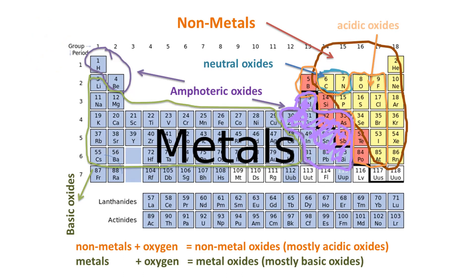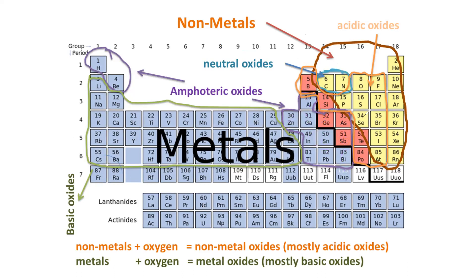For neutral oxides — those which do not react with acid or base — there are only two examples: carbon monoxide (CO) and nitrogen monoxide (NO). Note that carbon dioxide is acidic, but carbon monoxide is neutral. So learn that the neutral oxides are carbon monoxide and nitrogen monoxide.